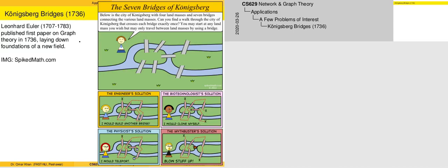It came about to have profound impact on various sciences — physical, sociological, biological, computational theory, engineering and so on. The basic problem actually refers to some islands situated along the Pregel River in the city of Königsberg in Russia.